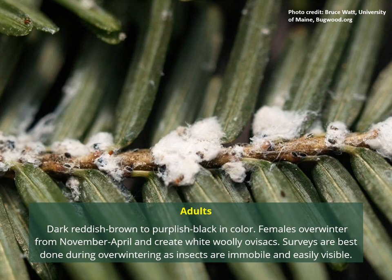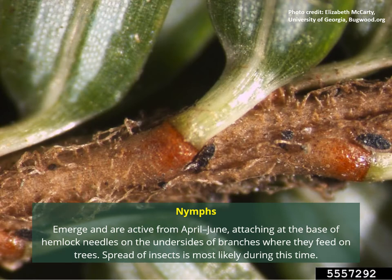You can go to hemlock trees and flip over branches to check the underside for these white woolly ovisacs. The nymphs will emerge and are active between April and June. If you look right at the base of the hemlock needle, right there attached to the branch is a nymph. They attach on the undersides of branches and feed there. These nymphs from April to June are quite active, so it's not advised to survey during that time because you might have a higher chance of spreading it from tree to tree.